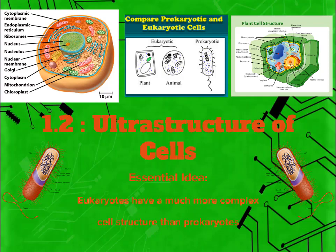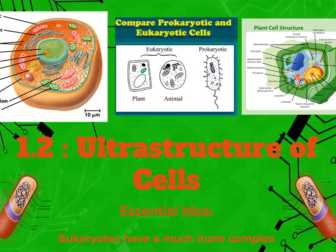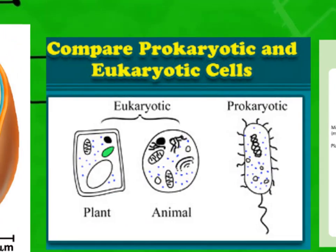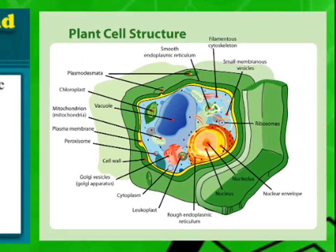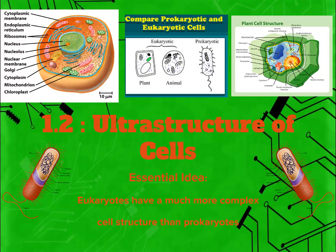Our topic today is probably not that new in terms of knowledge, but it's good to have a recap. We need to get down with the structures of the cells. The cell theory states that all living things consist of cells. I want to connect this topic to 5.3, which is all about the classification of living organisms — domain, kingdom, phylum, class, order, family, genus, species. Recall that we have three domains: Archebacteria and Eubacteria, which are prokaryotes, and the third is Eukarya — the eukaryotes. The essential idea here is that eukaryotes have a much more complex structure than prokaryotes.